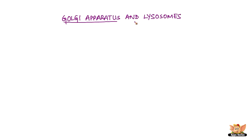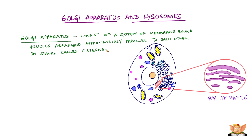Golgi apparatus and lysosomes. The Golgi apparatus, first described by Camillo Golgi, is one of the cell organelles. It consists of a system of membrane-bound vesicles arranged approximately parallel to each other in stacks called cisterns. Vesicles are small bubbles within a cell.